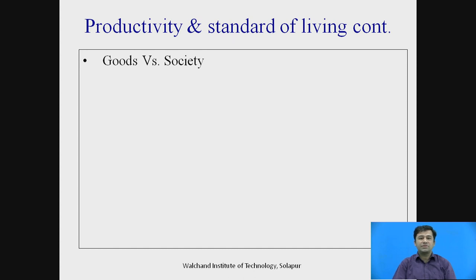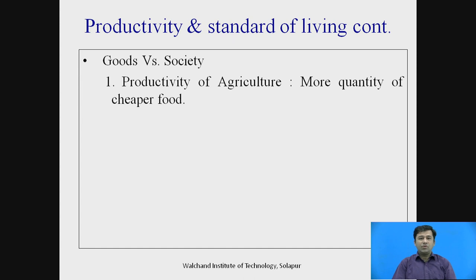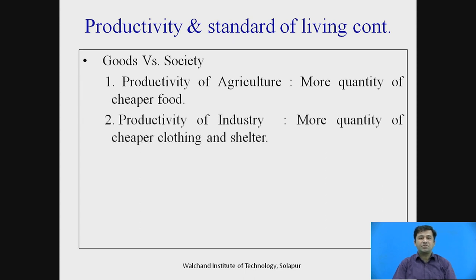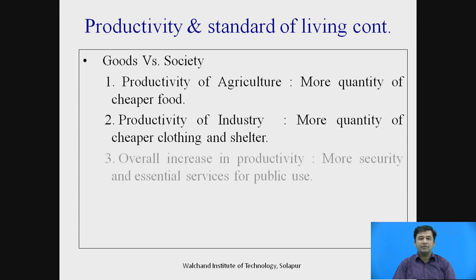Now we come to the topic goods versus society. If productivity of agriculture increases, then more quantity means food will be available at a cheaper rate. From an industrial point of view, more quantity means cheaper clothing and shelter due to competition — the person able to offer at the most competitive rate will sustain the industry. Overall increase in productivity leads to more security and essential services for public use, as seen in the Venezuela example.